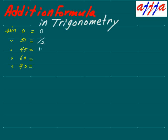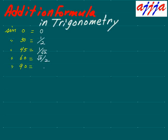Sine forty-five is one over square root two. Now, what about sixty? Sine sixty is square root three over two. Sine ninety is one over one, which is one.